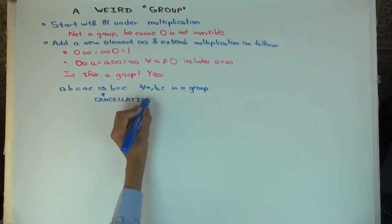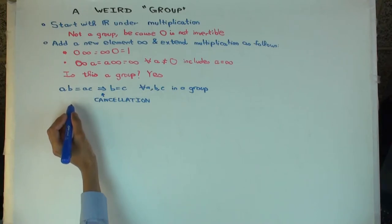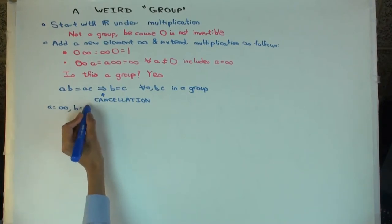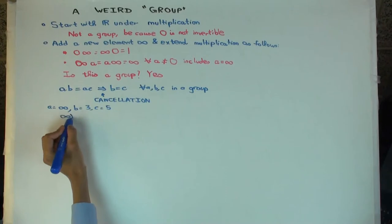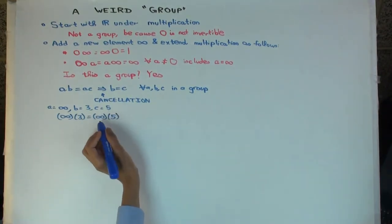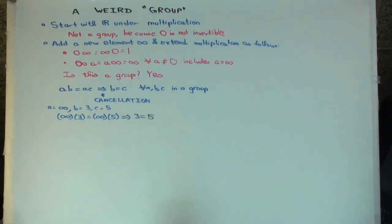Since this is a group it should satisfy cancellation. Let's look at a times infinity equals c, with a = infinity, b = 3, c = 5. Well, infinity times 3 is infinity, and infinity times 5 is also infinity, so both sides are equal. By cancellation we'd get 3 = 5. That's not true — so something went wrong.